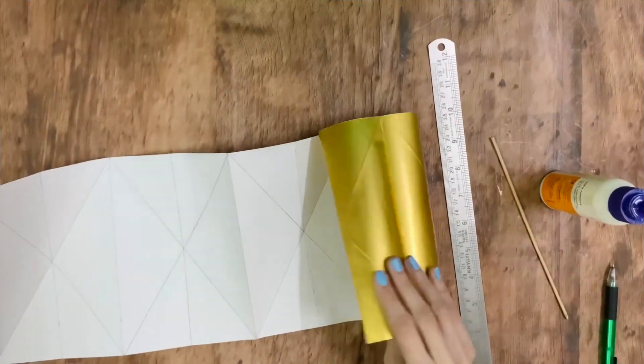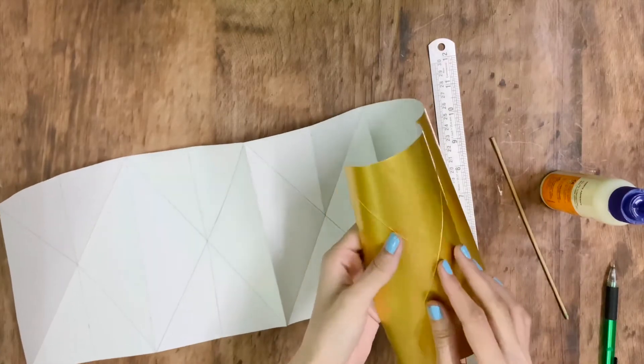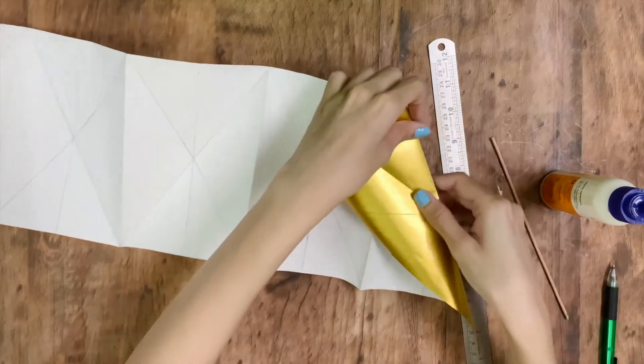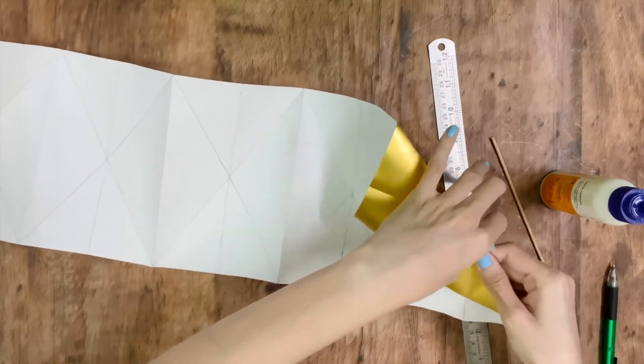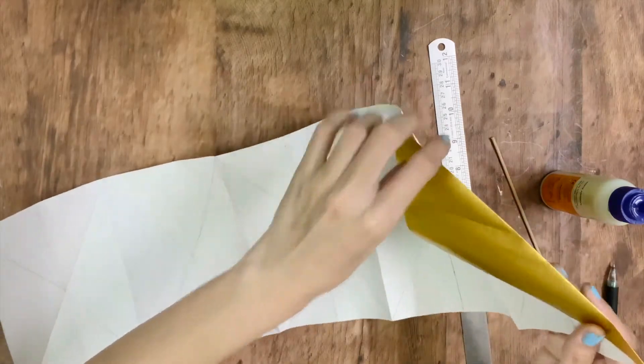Once you're done with this scoring, fold the paper along those slant lines, making sure that you form a triangle shape. Look carefully in the video. You have to form a triangle shape, pushing the inside triangles inward.